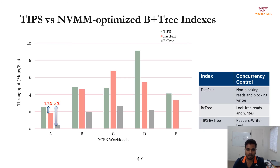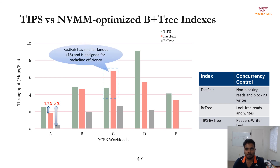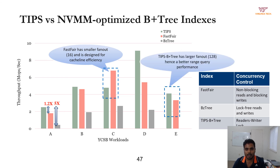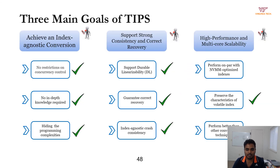Comparing TIPS-enabled B+ tree against NVMM-optimized B+ tree variants Phosphare and BZ tree: TIPS outperforms BZ tree by up to 5x and performs mostly on par with Phosphare except for workload C, which is a read-only workload. For workload C, Phosphare is faster because it is designed for cache-line efficiency with a smaller fanout supporting fast point queries. TIPS B+ tree with a larger fanout provides better range query performance than Phosphare by better exploiting fast sequential reads on NVMM. Overall, TIPS-optimized indexes perform on par with NVMM-optimized indexes and outperform other index-specific conversion techniques.